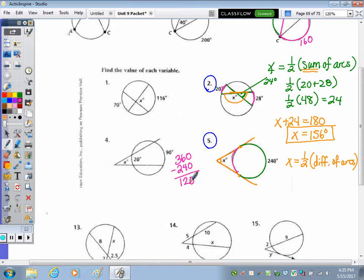So x is one half of, it's always the larger minus the smaller, so it's going to be half of 240 minus 120. That difference is 120, so then half of 120 gives us an x value of 60 degrees.